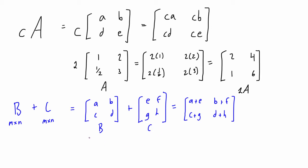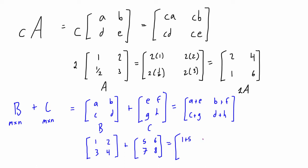Let's attach some numbers. Matrix B is 1, 2, 3, 4 and matrix C is 5, 6, 7, 8. When we add these two matrices, we get 1+5, 2+6, 3+7, and 4+8. So the final answer of B plus C is 6, 8, 10, and 12.